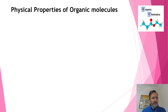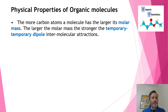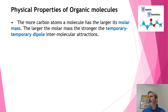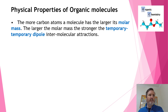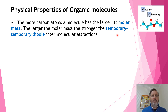Now let's look at some physical properties. The bigger an alkane gets, the bigger its molar mass, and the more likely its electrons are to be imbalanced at any given time — you get more electrons on one side than the other. This creates stronger temporary dipole intermolecular attractions. A larger molar mass means stronger attractions, so something like octane has stronger attractions than methane.